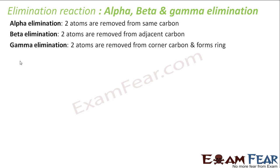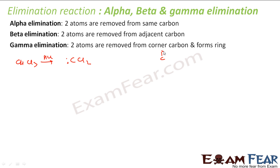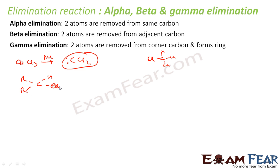In alpha elimination, for example with CHCl3, I am trying to remove HCl. From the same carbon, chlorine and hydrogen are both removed, and it becomes CCl2. So from a single carbon, both atoms are eliminated. In the generalized form: if I have R, H, H, H, and Cl on one carbon and I remove HCl, that reaction from the same carbon is called alpha elimination, where both atoms are removed from the same carbon.